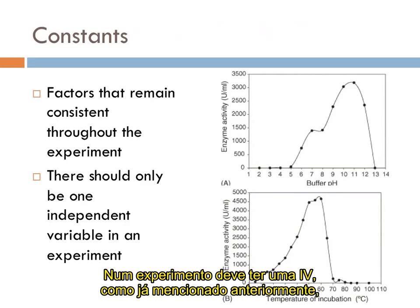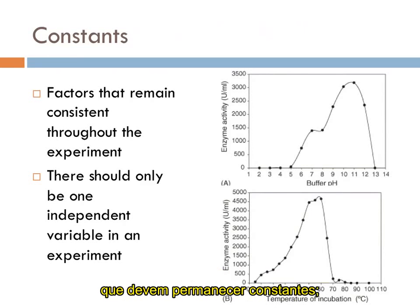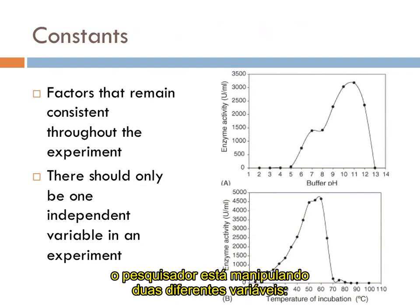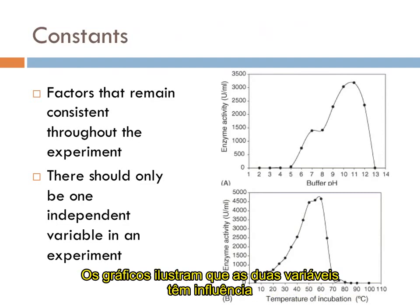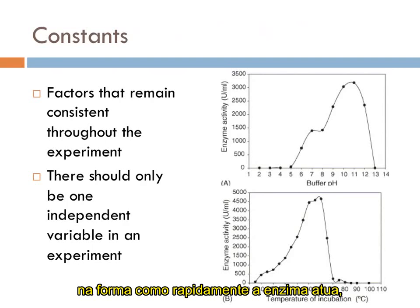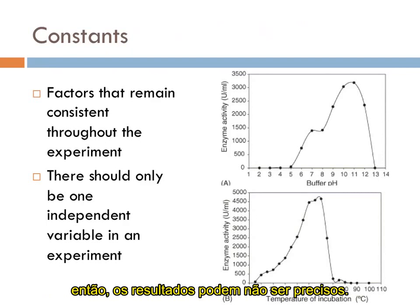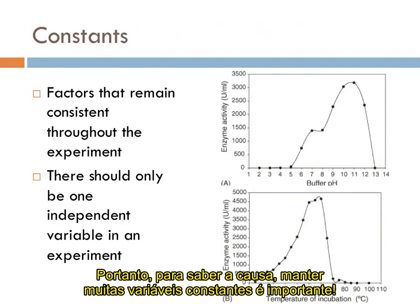In a given experiment, there should be one independent variable, as mentioned earlier. As many other variables as possible should remain constant, or the same. If more than one factor is varied — whether intentionally or unintentionally — the cause of some change might be left to question. In the graphic to the right, an experimenter manipulates two different variables: the pH, or the acidity or basicity of a substance, and the temperature of a solution, and looks at how fast an enzyme works. As the graphs illustrate, both variables play a large role in how quickly the enzyme works. If both were modified at the same time, the results may not accurately depict the relationship between the independent and dependent variables. So maintaining lots of constants is important.